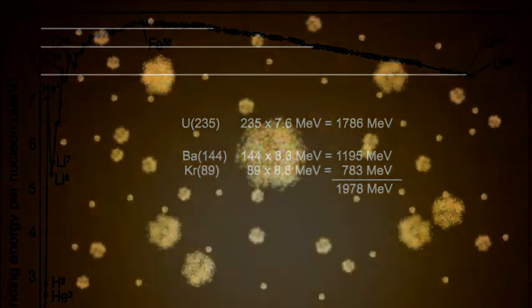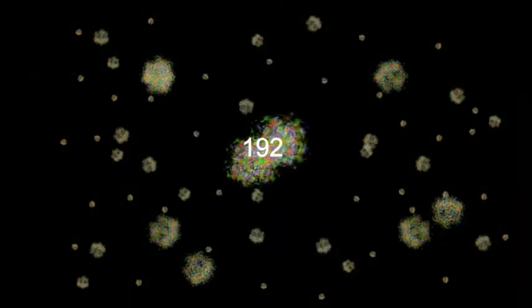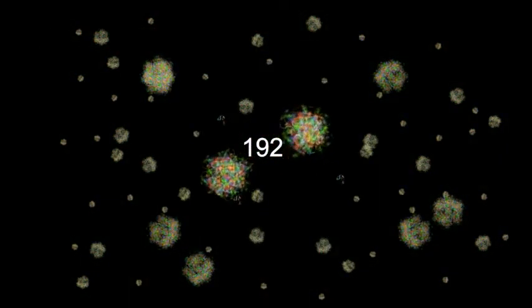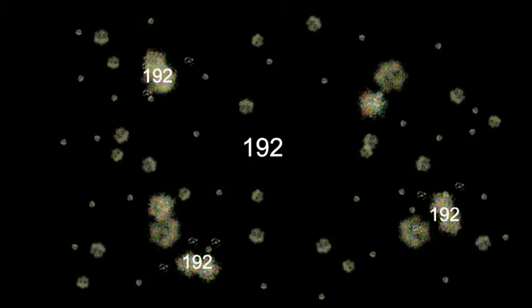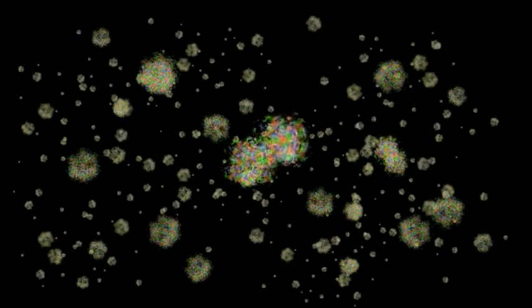So every time a nucleus of uranium fissions, we get about 192 MeV of energy. But U-235 left to its own devices might take billions of years to decay, so we will want to help it along. We do this by shooting a slow neutron into it. It absorbs the neutron and briefly becomes U-236, then it splits into krypton-92.